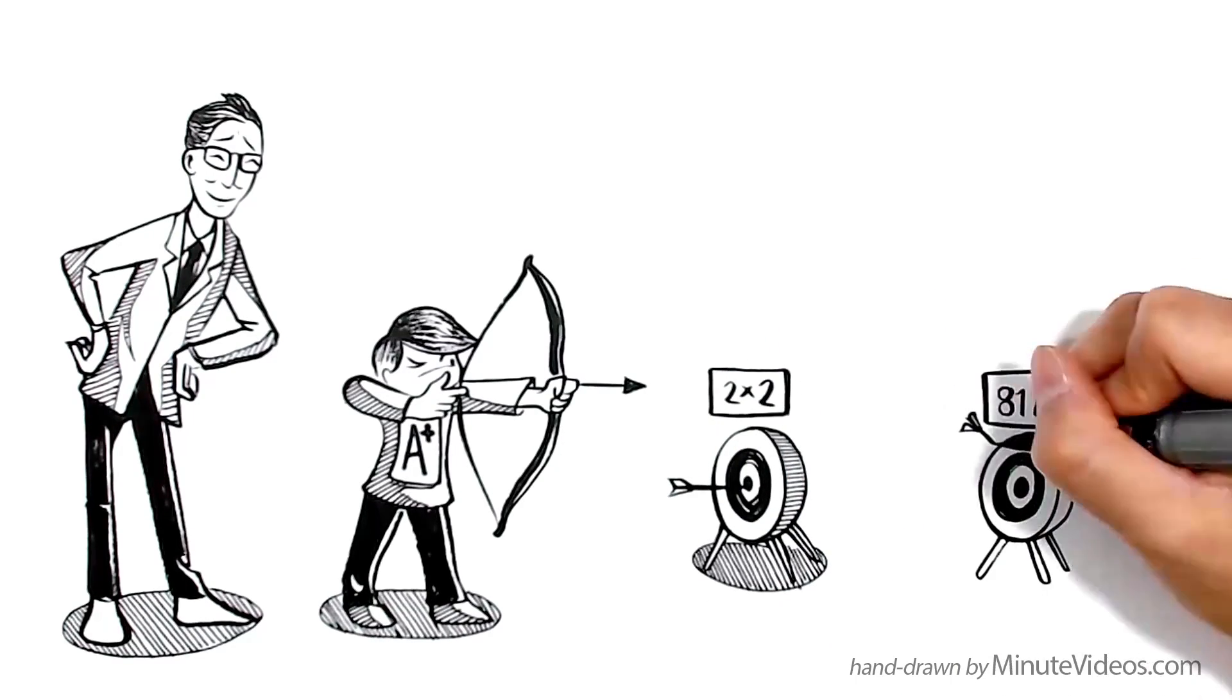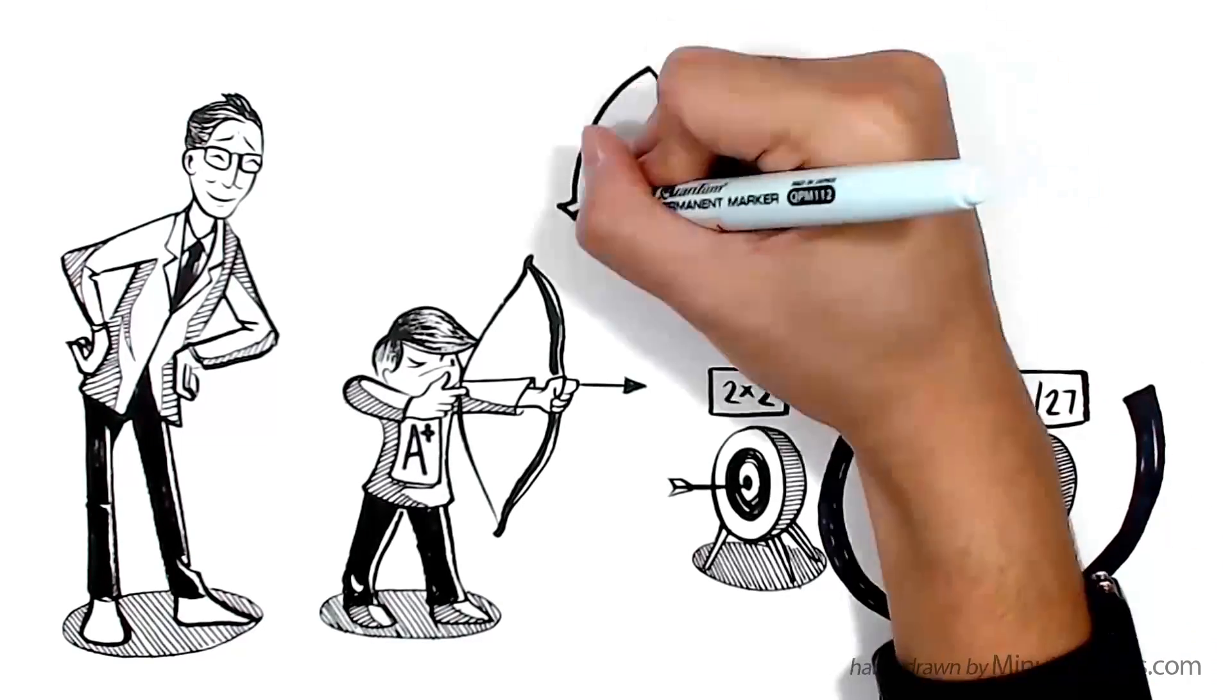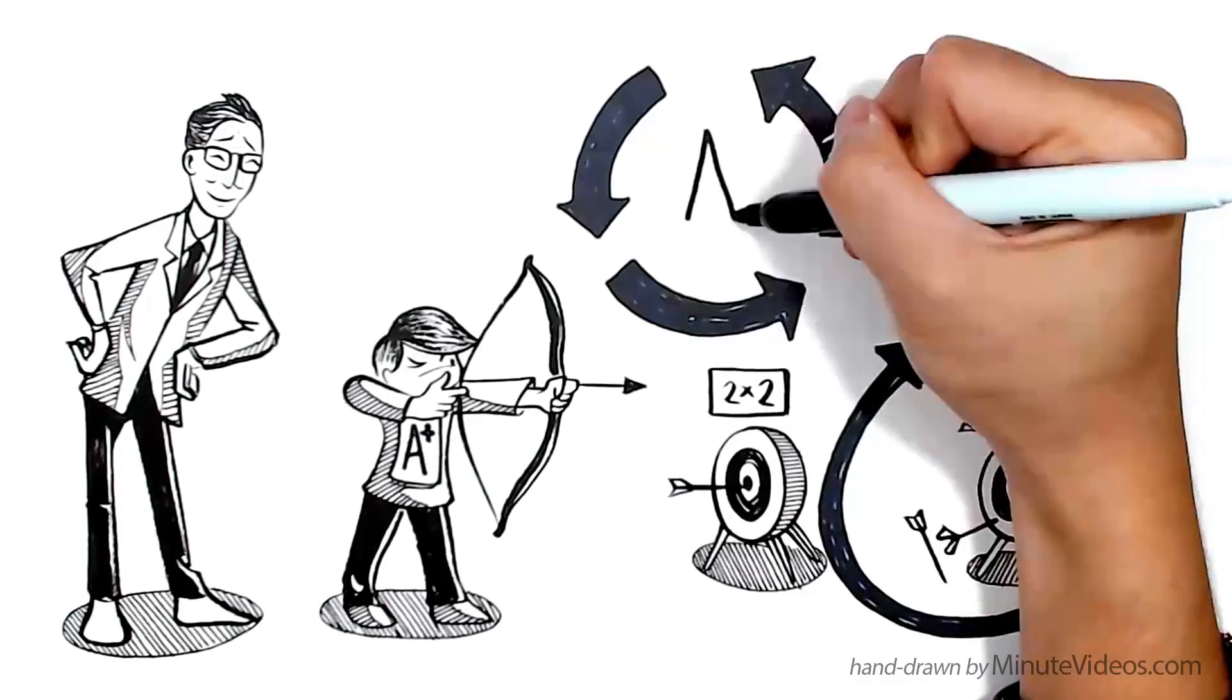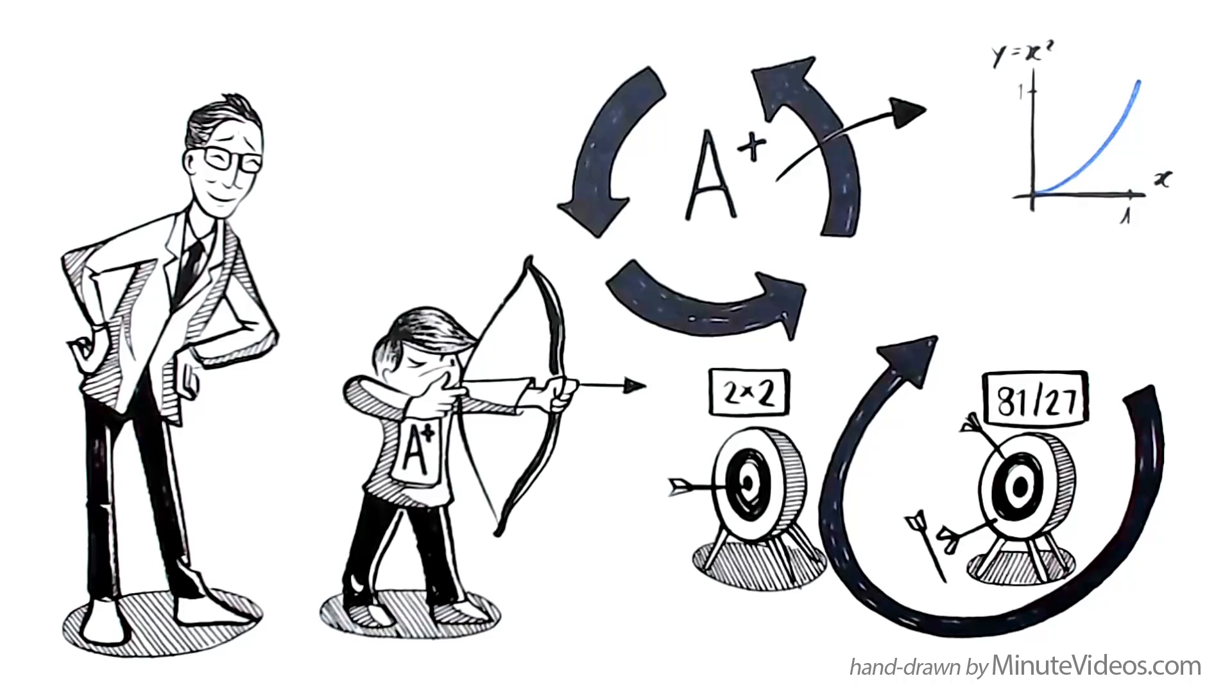If students do not achieve mastery on the test, they go back to study and then get tested again. This cycle continues until the student gets it right. Only then may they move on to learn the next thing.